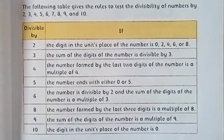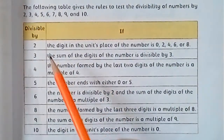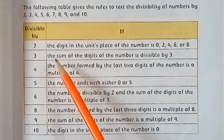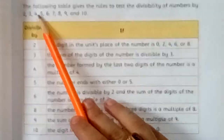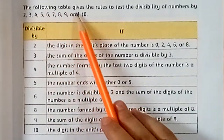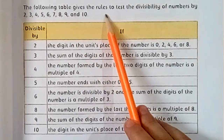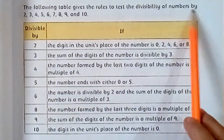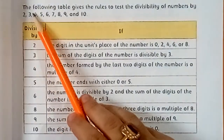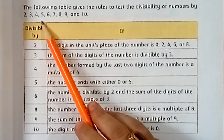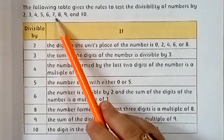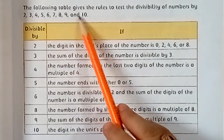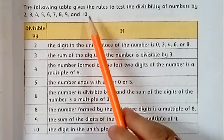So let's start. The following table gives the rules to test the divisibility of numbers by 2, 3, 4, 5, 6, 7, 8, 9, and 10.